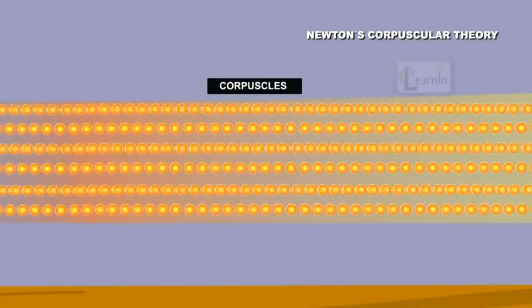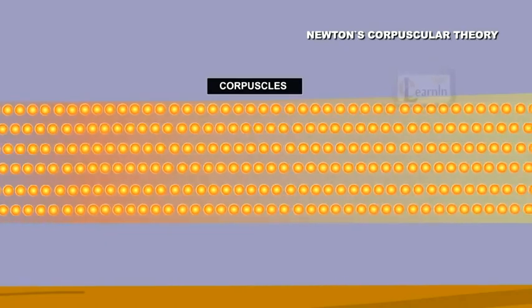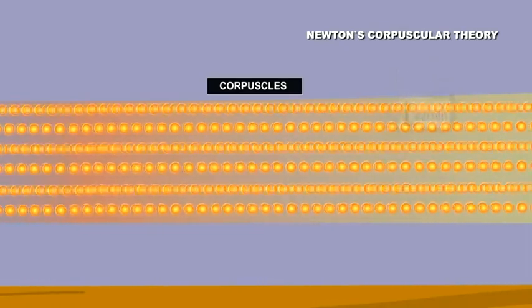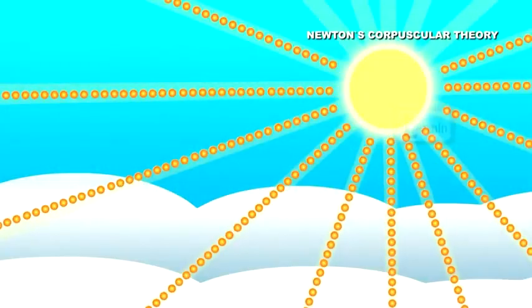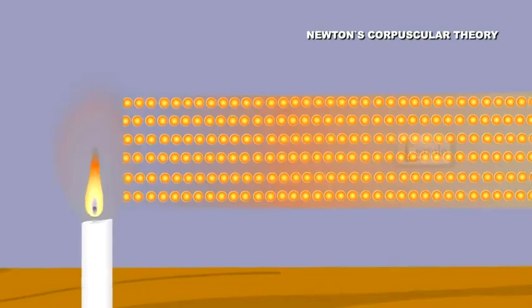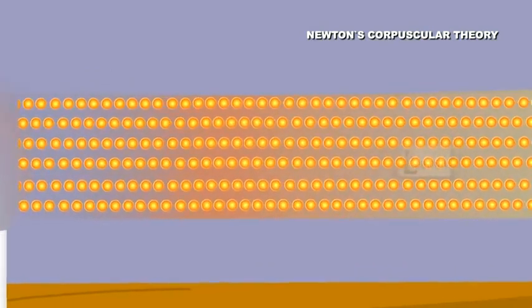Newton thought light was a particle because he never witnessed light diffraction. The wavelength of light was too small for the experiments he ran. For decades, his view was never questioned. But in the early 1800s, that changed, based on experiments by Thomas Young.